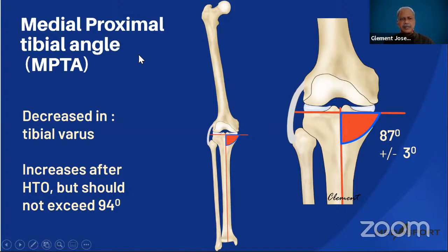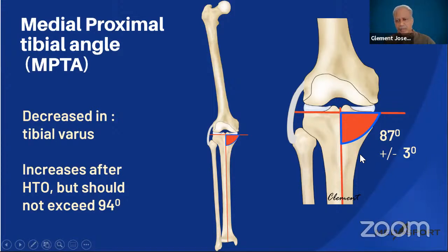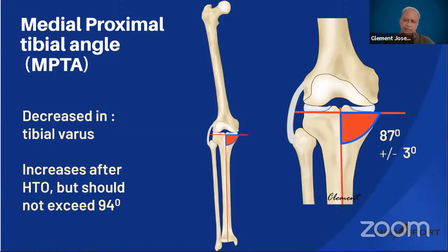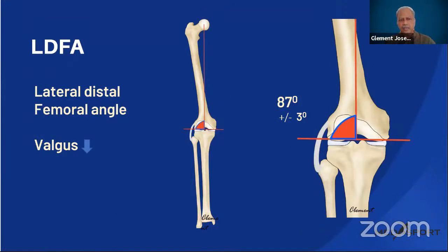The medial proximal tibial angle (MPTA) is the angle formed between the mechanical axis of the tibia and the tibial articular surface joint line, measured on the medial side. Normally it is around 87 degrees (±3°). In a varus deformity from the tibia, this angle will be reduced. When performing an opening-wedge HTO, you increase this angle, but there is a limit — normally up to 94 degrees. Beyond that, you risk an oblique joint line.